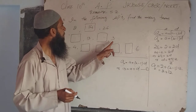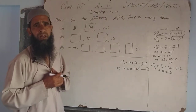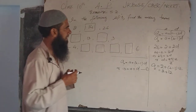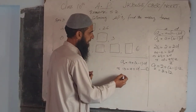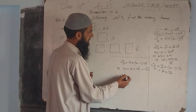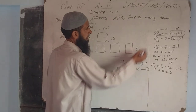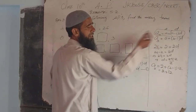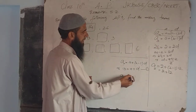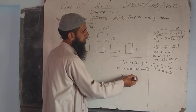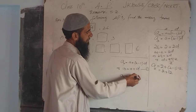Now the fourth term is also available. A4, with N=4, becomes A + (4-1)D = A + 3D.